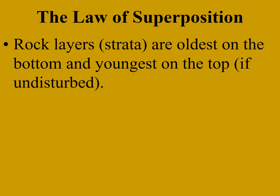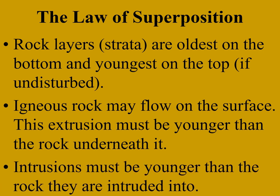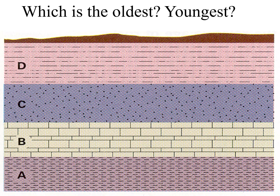The law of superposition — the first and simplest law: rock layers are oldest on the bottom and youngest on the top. Igneous rocks might flow on the surface, and wherever they flow or cut through anything, the igneous rocks must be the last thing to occur there. In other words, they had to have flowed over or through rock that was already existing. So, intrusions must be younger than the rock they're intruded into. You can see the order: A was laid down first, then B, C, and D on top of it.